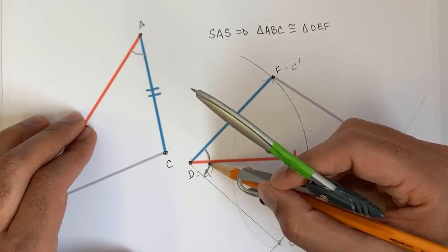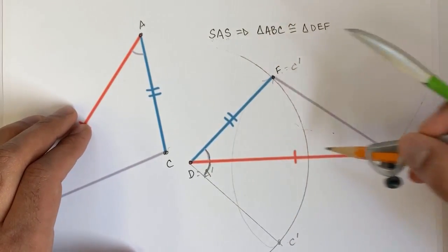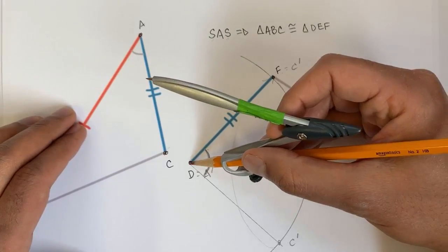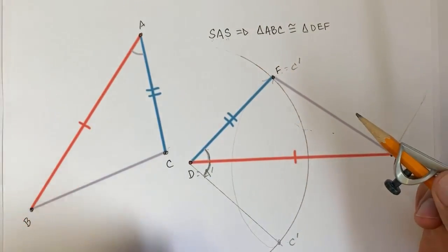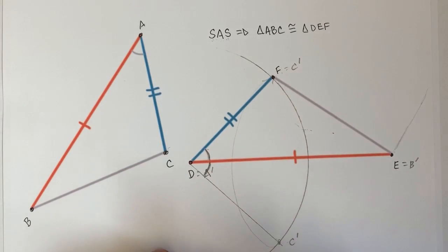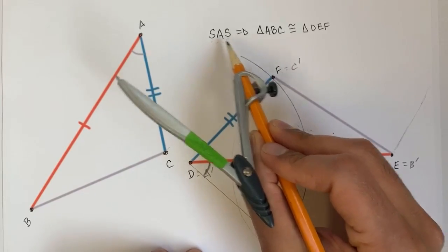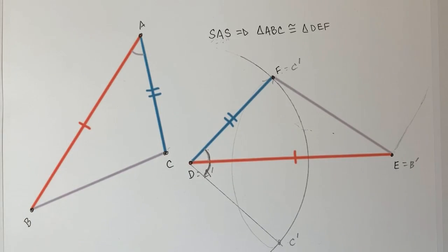How do we know that C prime would then be mapped to F? Well, this angle would be preserved due to the rigid transformation, so as we flip it over, as we do the reflection over DE, the angle would be preserved, and A prime C prime will then map to DF. And then we'd be done. We have just shown that there's always a series of rigid transformations, as long as you meet this SAS criteria, that can map one triangle onto the other, and therefore, they are congruent.